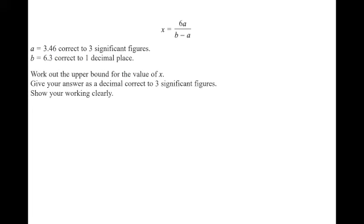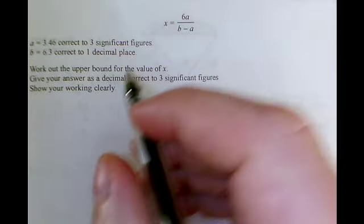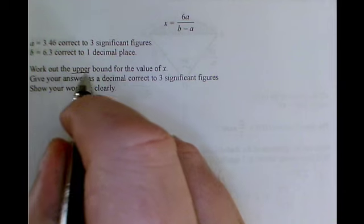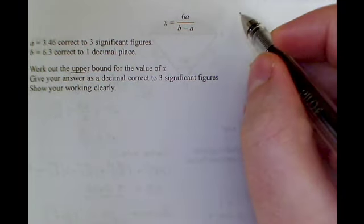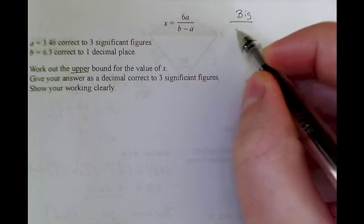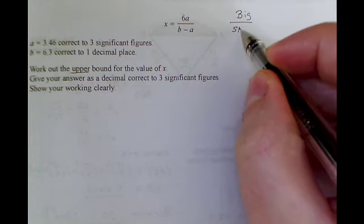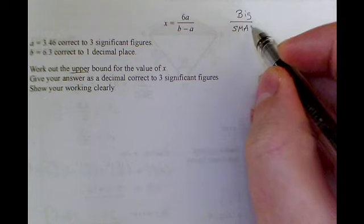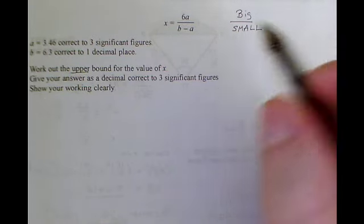Okay, so we've got a bounds question here, and what we're going to do is make sure we understand when it's asked for the upper bound what that means. The upper bound is the biggest value x could possibly be. If you've got a fraction, to make a fraction as big as possible you want the numerator to be really big, and you want the denominator to be as small as possible.